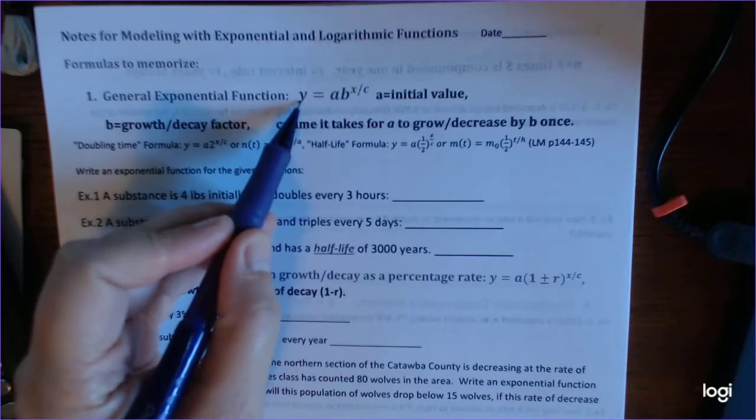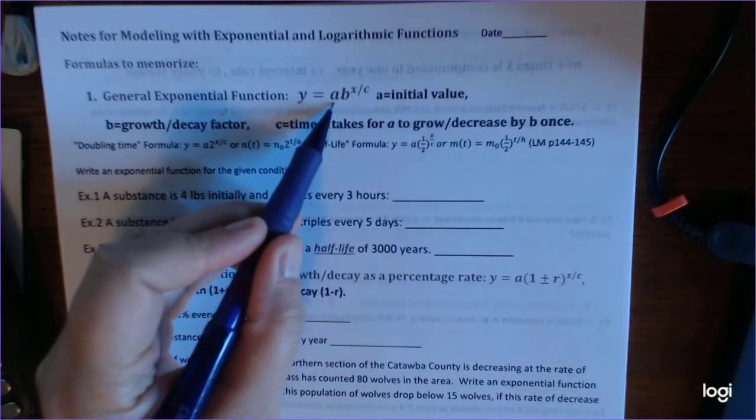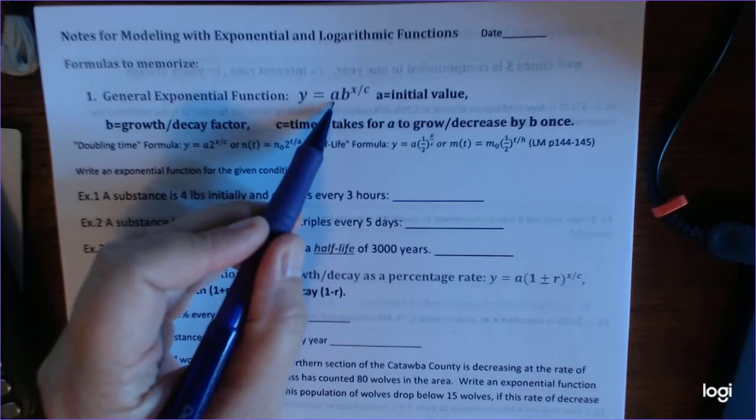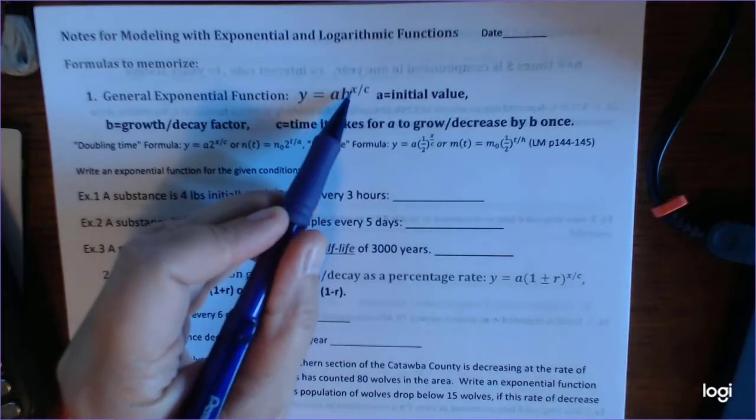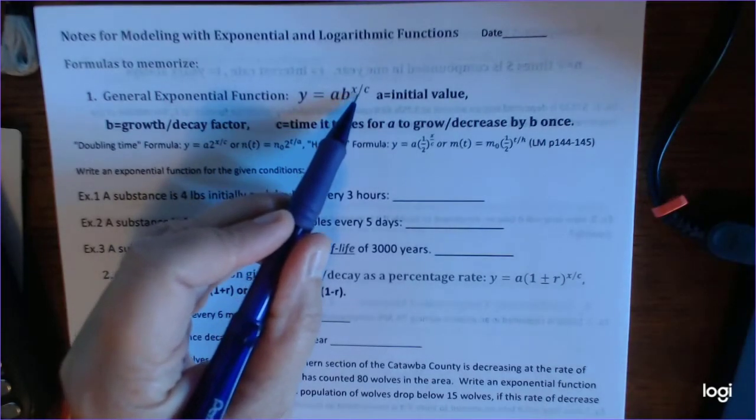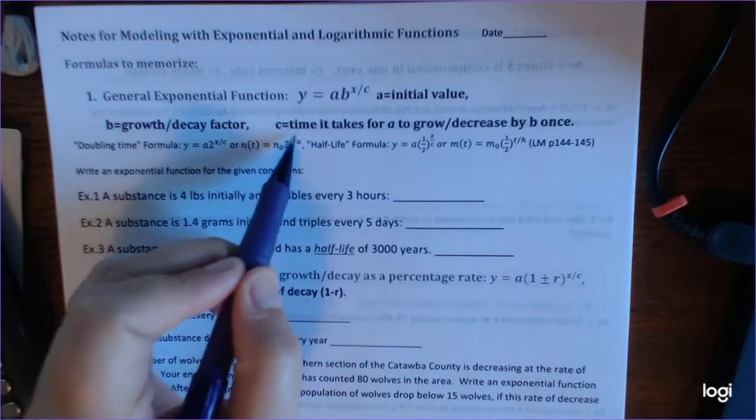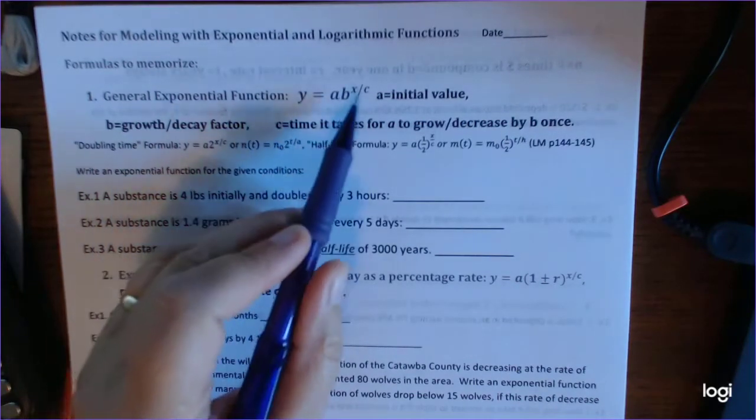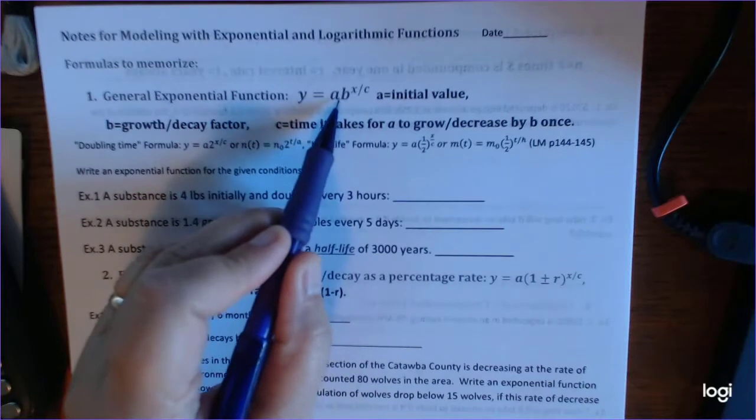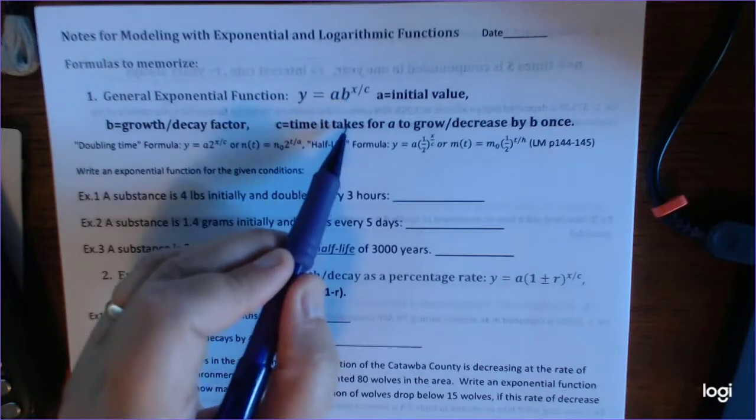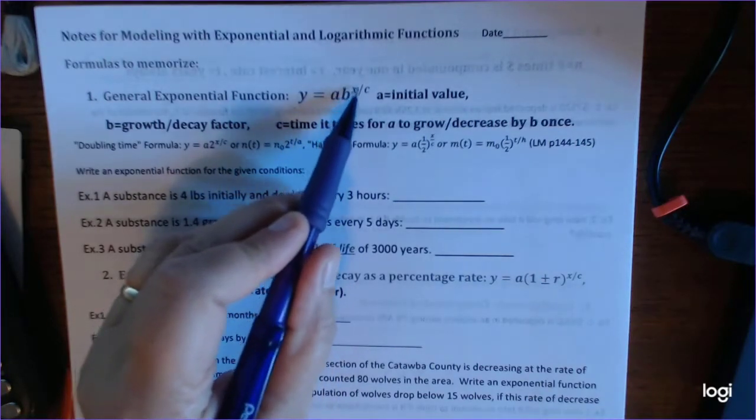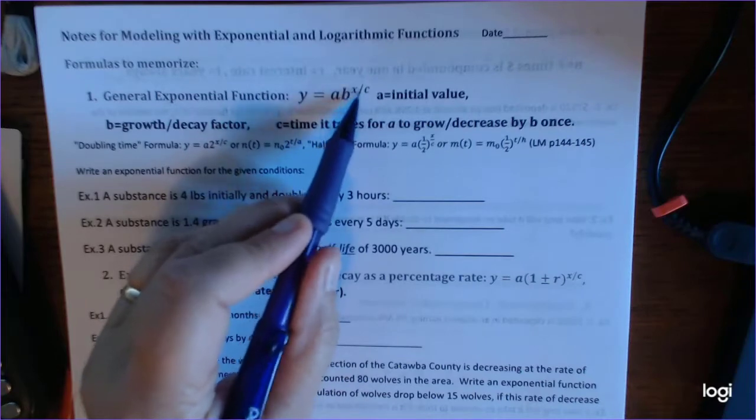So you have the output is equal to A, and A is the initial value, initial amount, times B, which is your growth factor to the X, that's your input, over C. And C is hard to explain until we look at an example. C is the time it takes for A to grow that factor one time. You can't multiply those two together because you've got this exponent on the base that you'd have to do first.